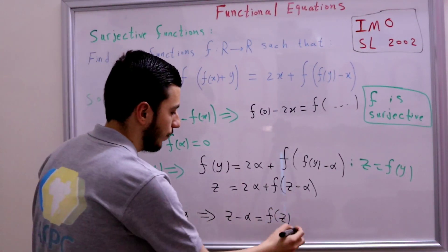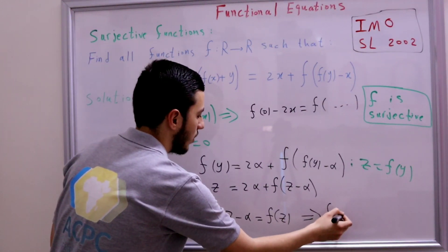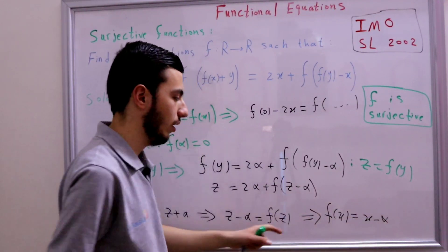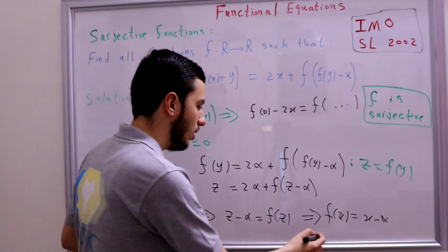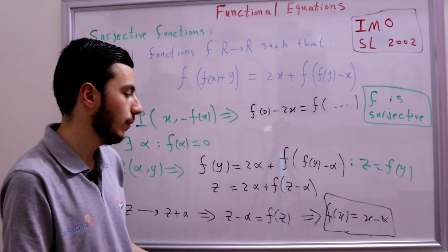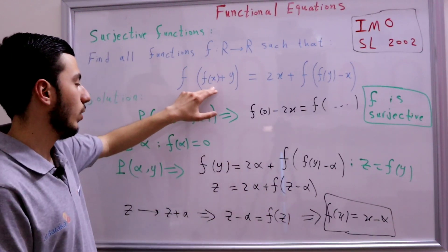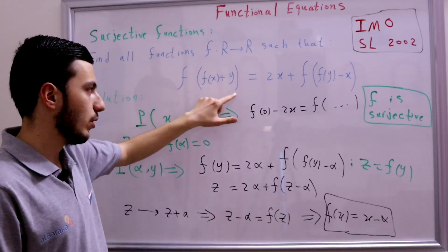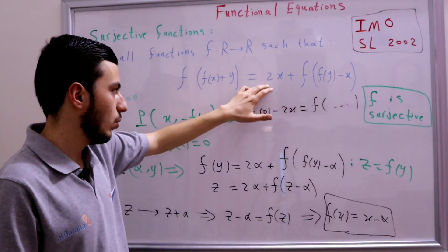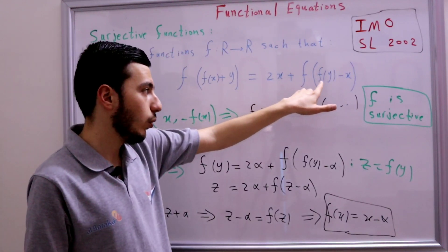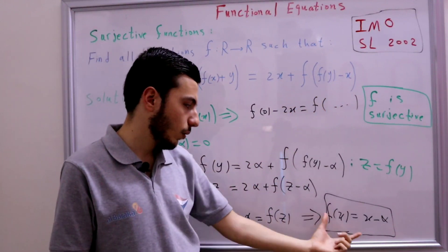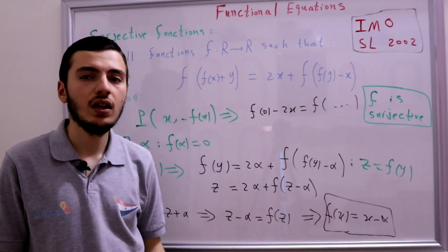So our function is f(x) = x - α for some constant α. Now we just need to verify this is indeed a solution. On the left-hand side we get x + y - α - α = x + y - 2α. On the right-hand side, y - x + 2x - α - α = x + y - 2α. It matches, so f(x) = x - α is indeed a solution.